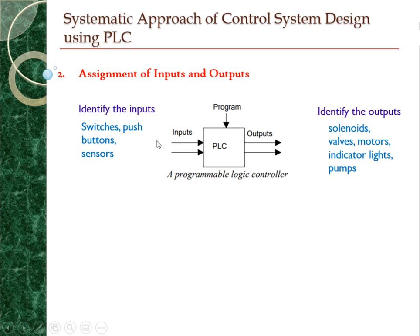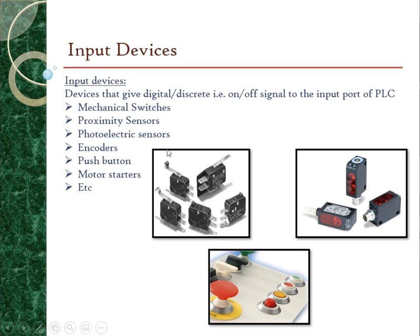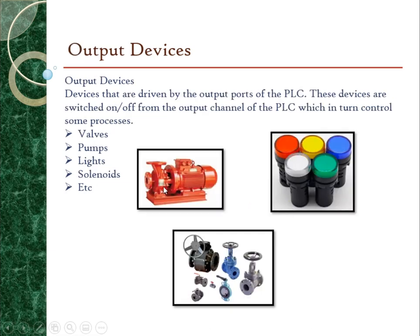You have to identify the inputs and outputs of the system first. Examples of input devices include mechanical switches, proximity sensors, photoelectric sensors, encoders, push buttons, and motor starters. Examples of output devices include valves, pumps, lights, solenoids, and motors.